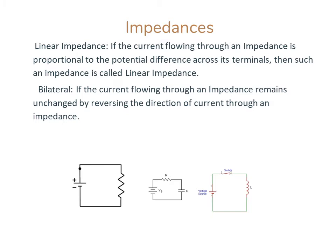Impedances — Linear Impedance: If the current flowing through an impedance is proportional to the potential difference across its terminals, then such an impedance is called a linear impedance.